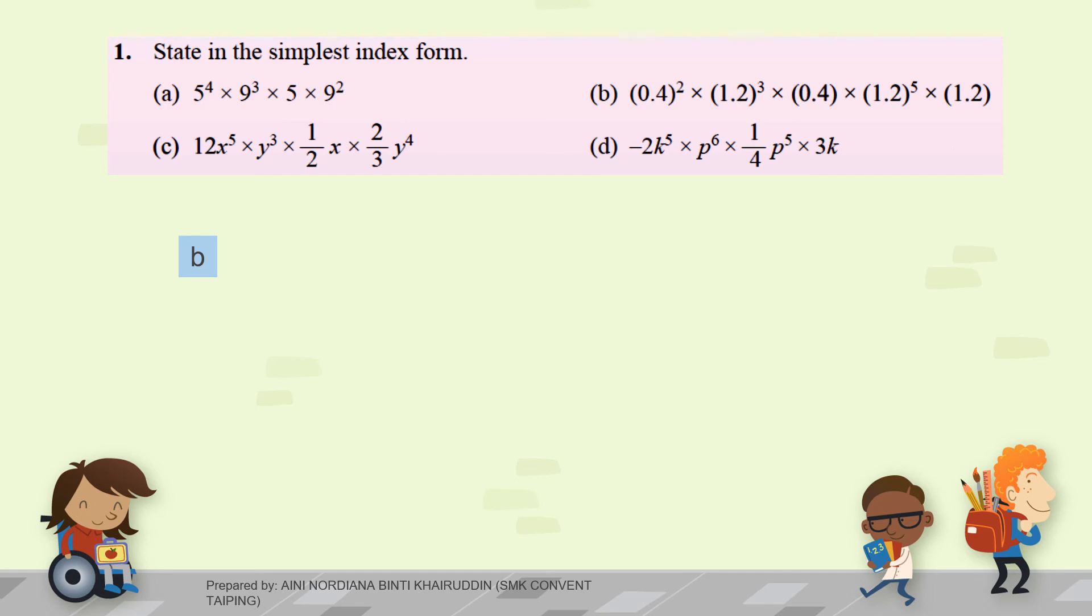Next, question B. 0.4. We have 2 0.4 here. So, 2 plus 1 times 1.2 to the power of 3 plus 5, 5 plus 1. So, this is the final answer.